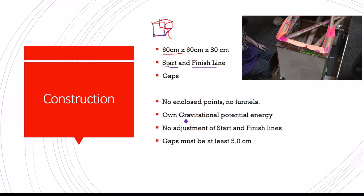And you can only use your own gravitational potential energy, so you can't have anything like springs and such like that. Again, you can't adjust your start and finish line, and gaps must be at least five centimeters horizontally to be able to be counted as a gap.